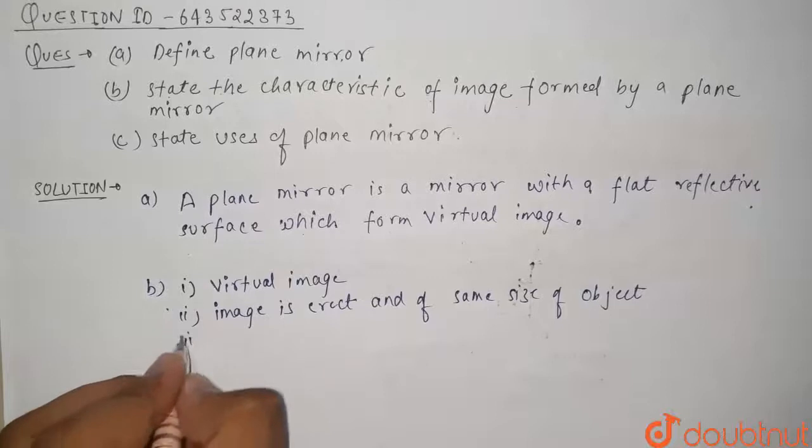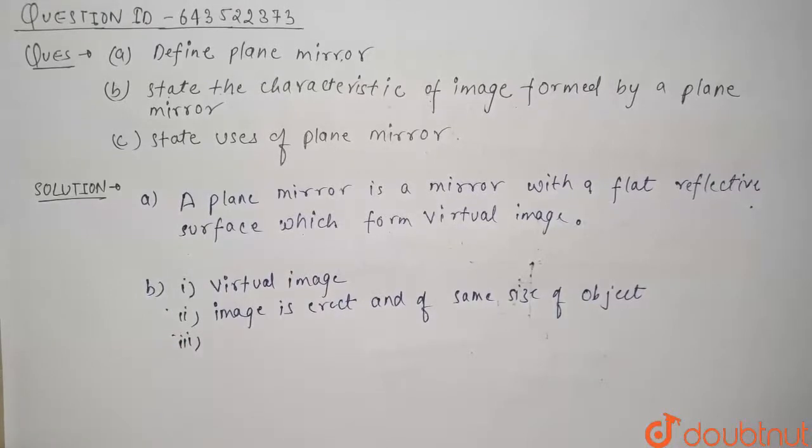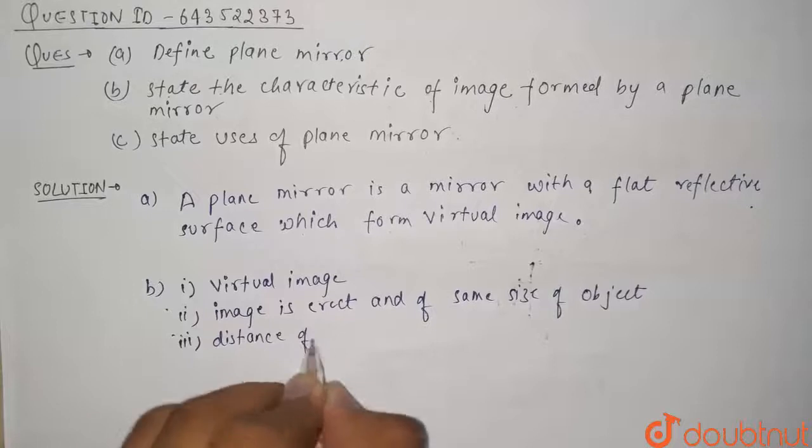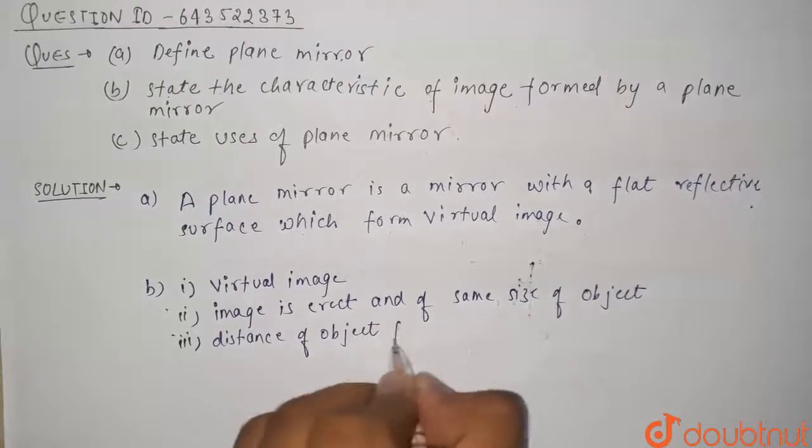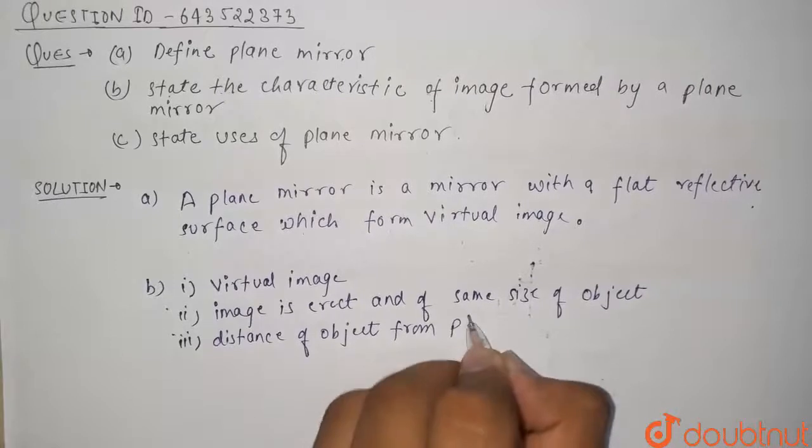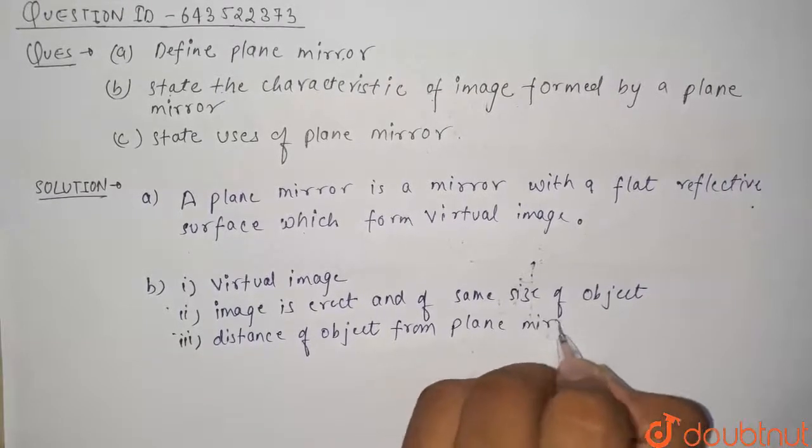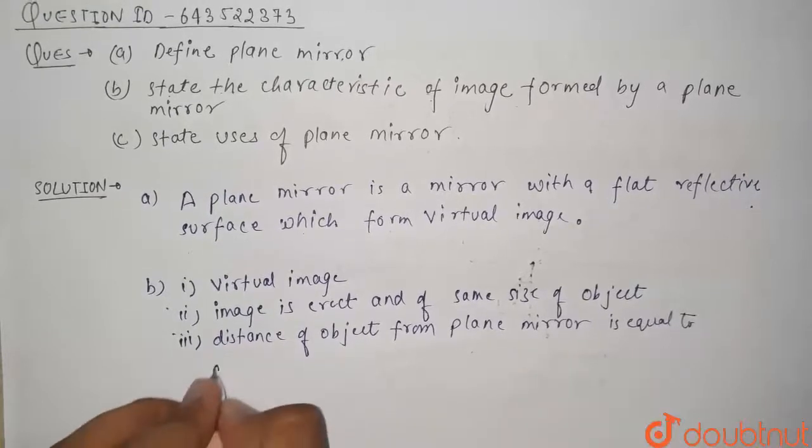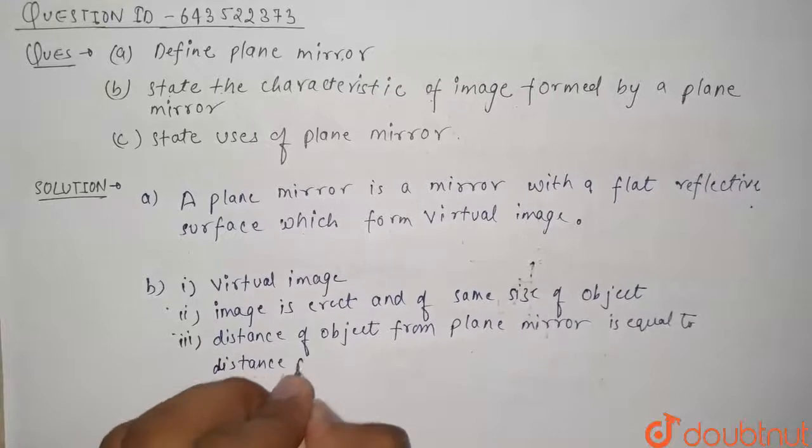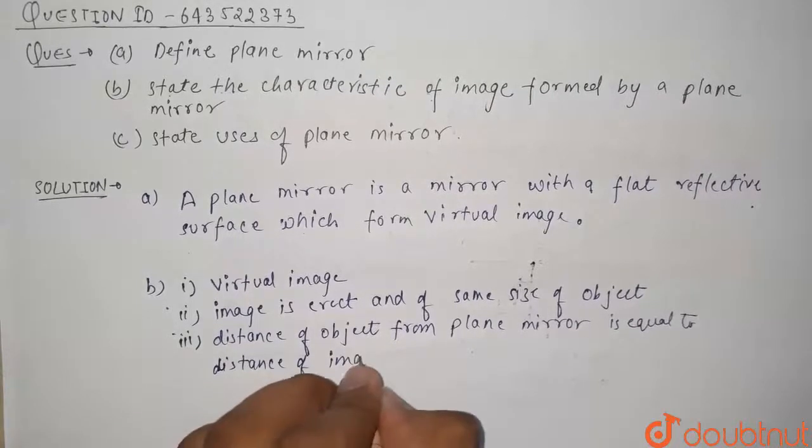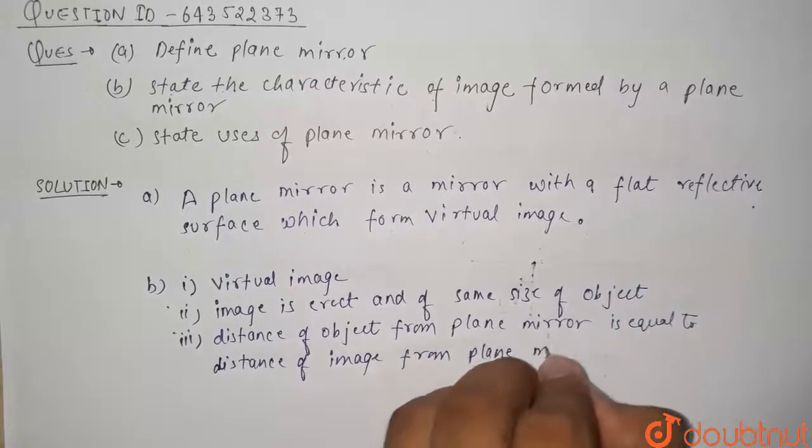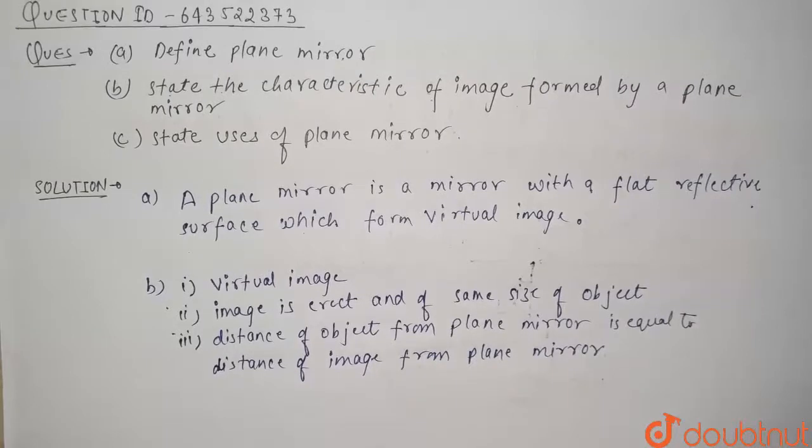Third point is that the distance of object from the plane mirror is same as the distance of image from the plane mirror. So these are characteristics of images formed by plane mirror.